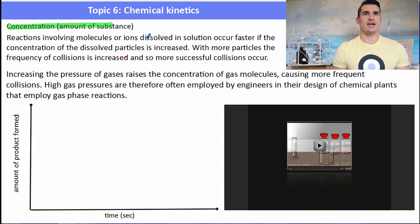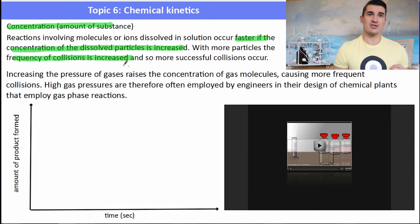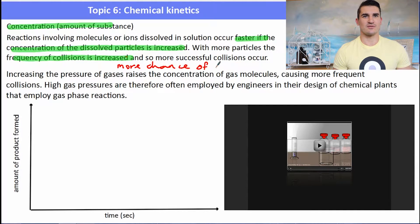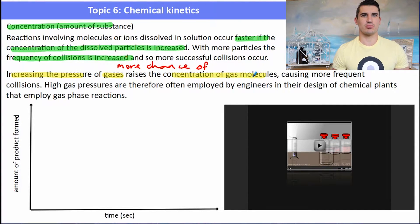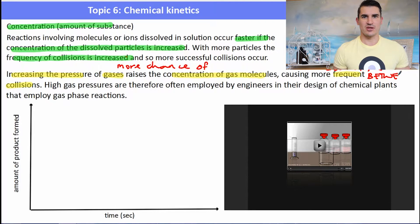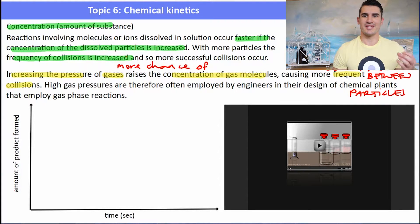Talking about concentration: reactions involving ions in solution occur faster if the concentration of the dissolved particles is increased — the molarity is increased. If we have more particles, that's going to lead to a larger number of collisions, which will then lead to a greater chance of successful collisions. We can do the same thing with gases — if we have a gas we can increase the concentration by changing the pressure. If we shrink the volume of a container, that's like increasing the concentration, because there's less space between the particles, which means there will be more collisions. The greater number of collisions, the greater the number of successful collisions. We can employ a gas cylinder to help with that by reducing the volume.